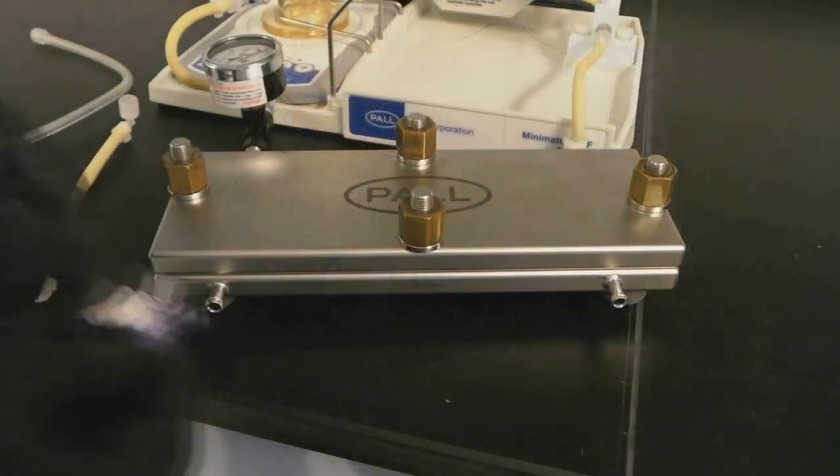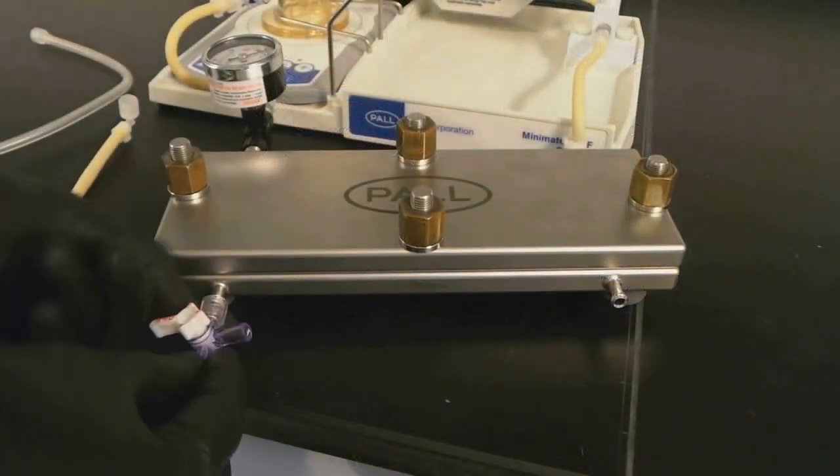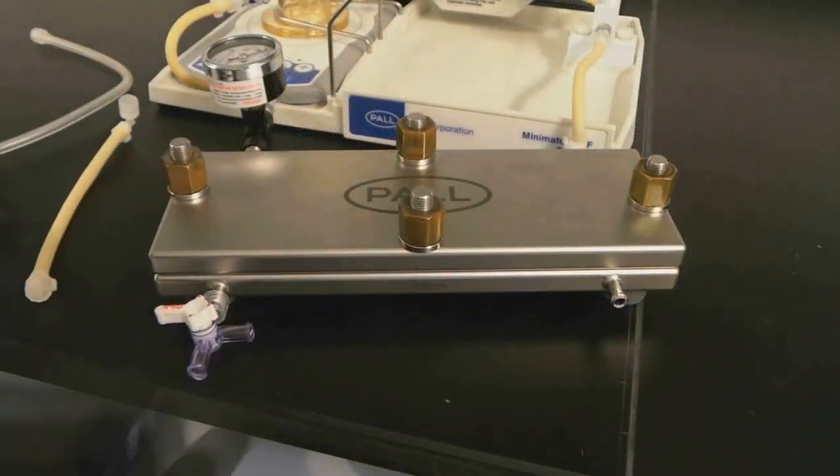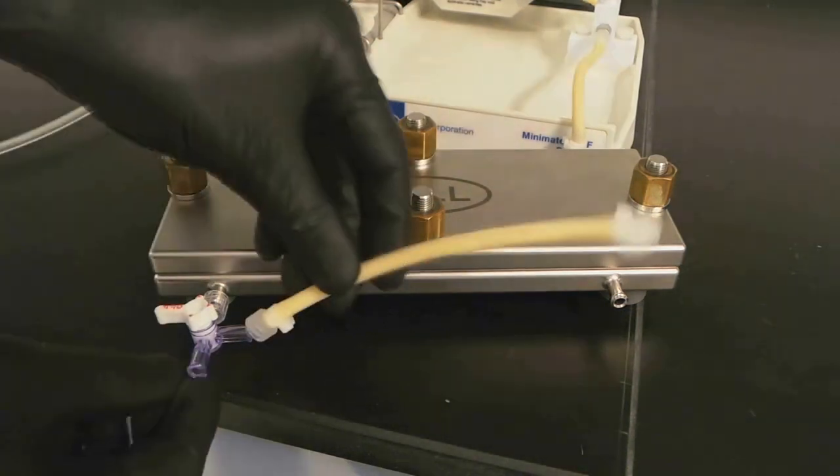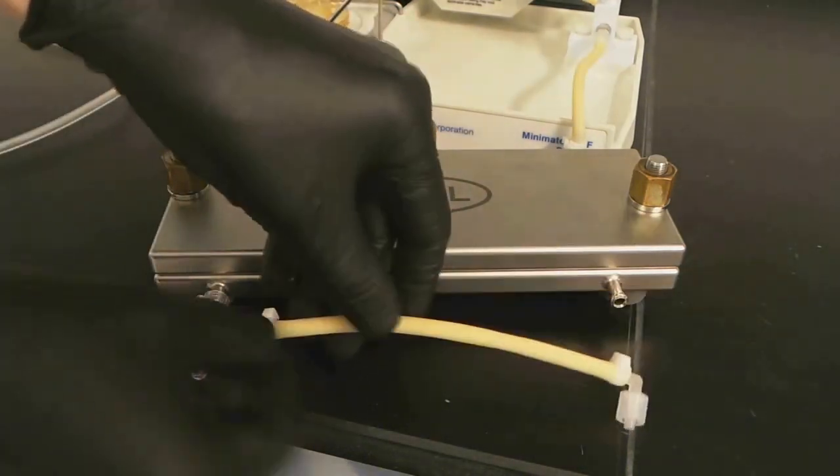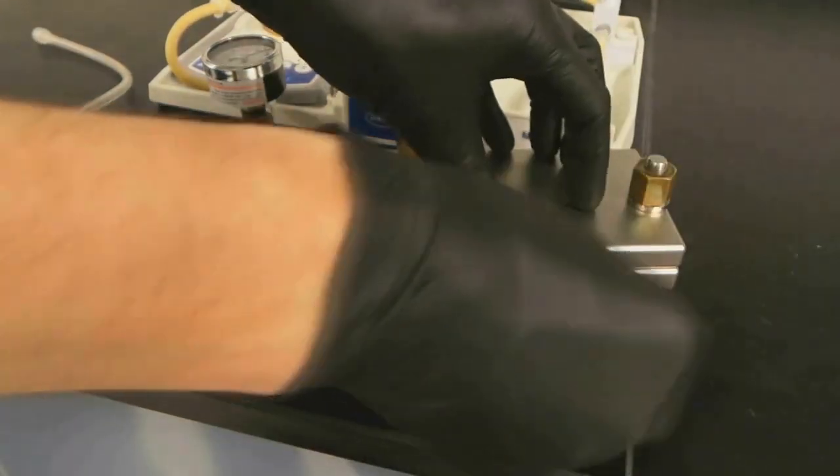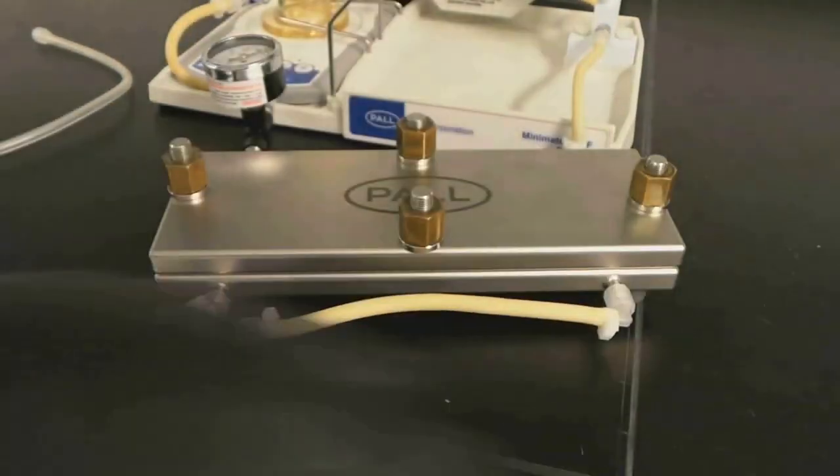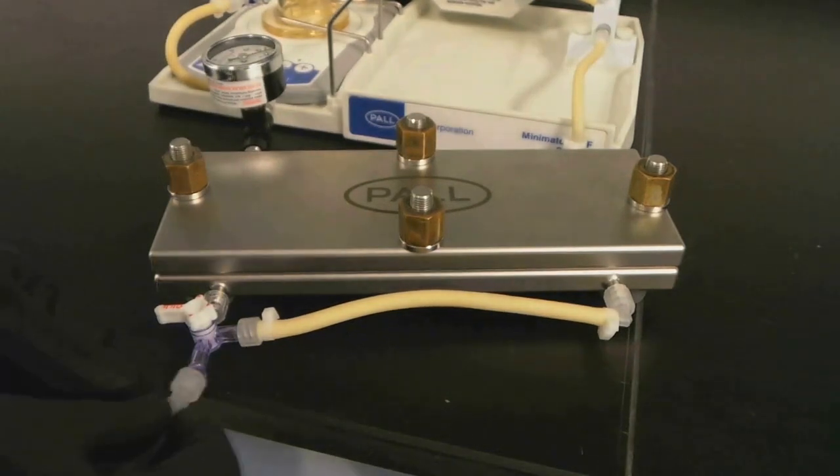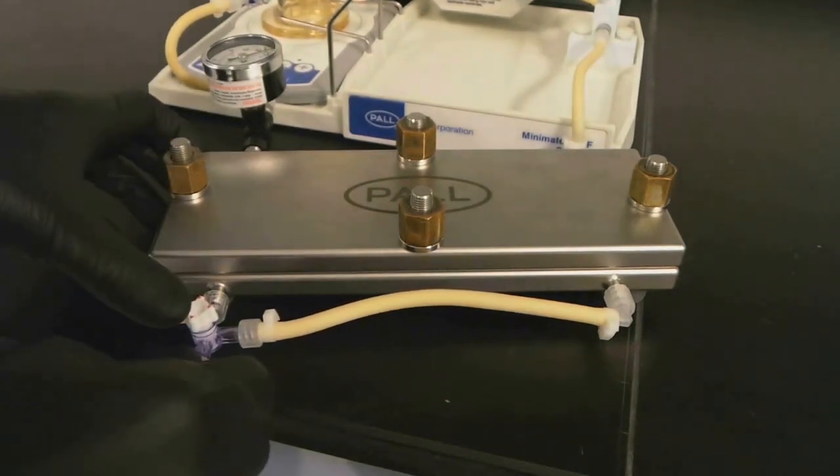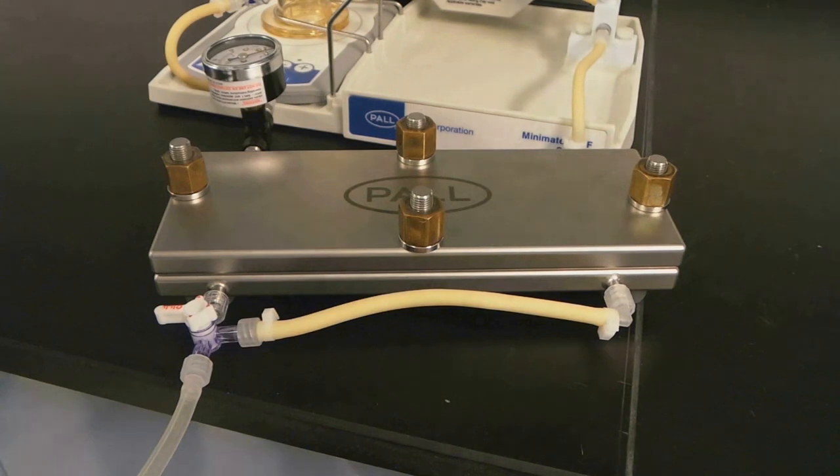On the opposite side of the holder, attach a three-way valve to the filtrate outlet. Then connect another piece of tubing from the T to the opposite port on the same side. Finally, connect another piece of tubing from the valve and place the tubing into a waste container.